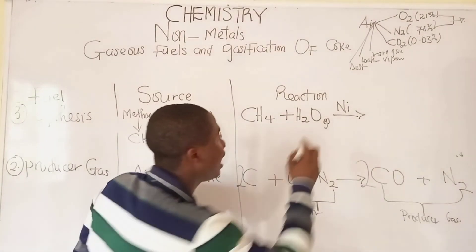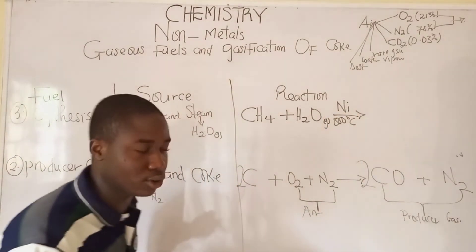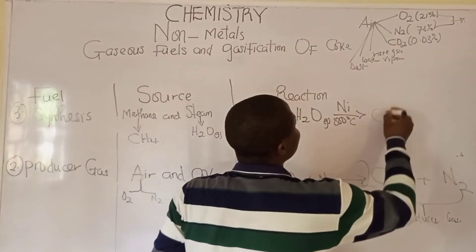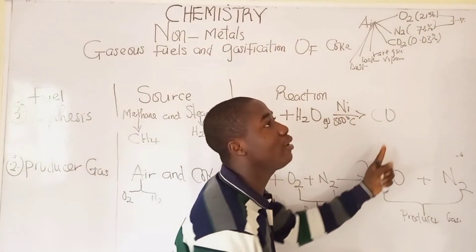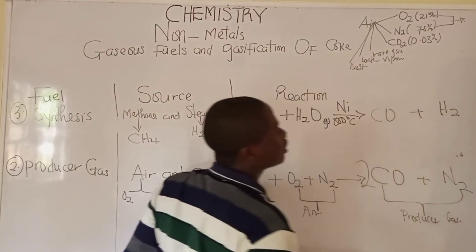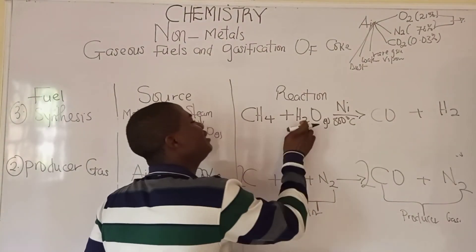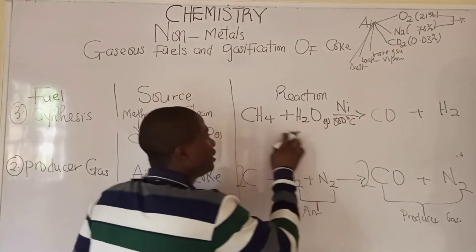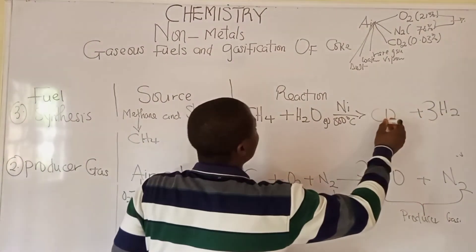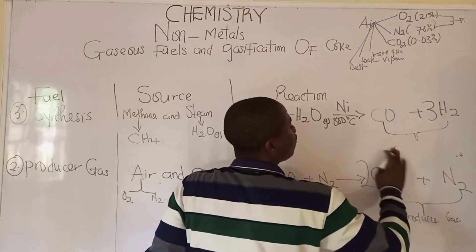The catalyst is nickel (Ni), at a temperature of about 800°C. The reaction: CH₄ + H₂O → CO + H₂. Balancing the hydrogen: 4 + 2 = 6 hydrogen atoms, so we place 3 moles of H₂. The balanced equation is CH₄ + H₂O → CO + 3H₂. This product is called synthesis gas.